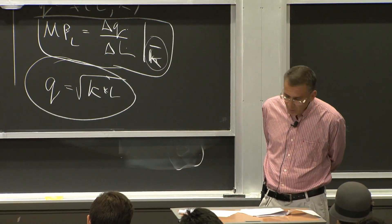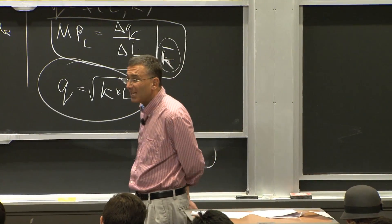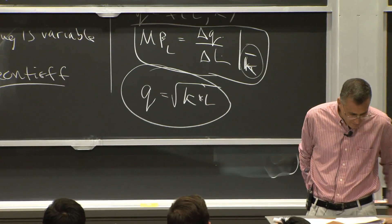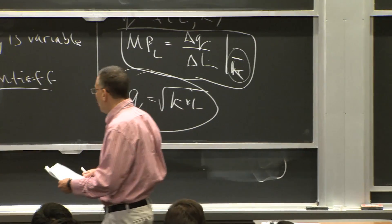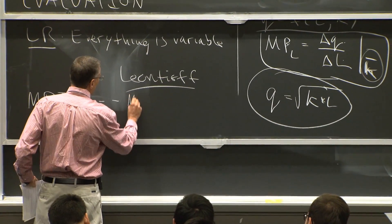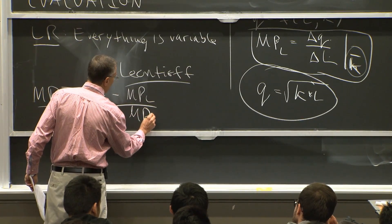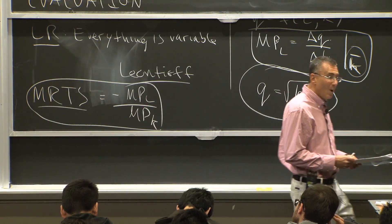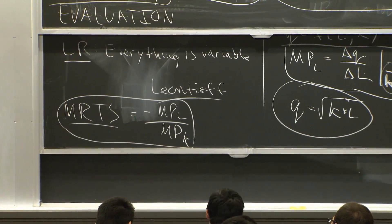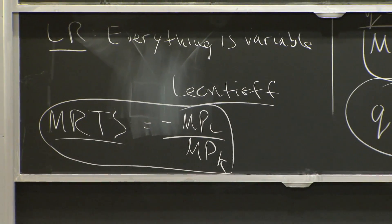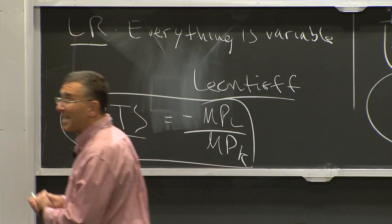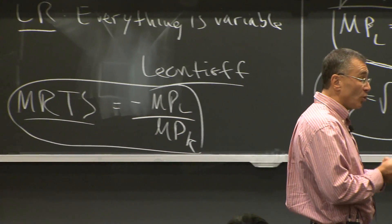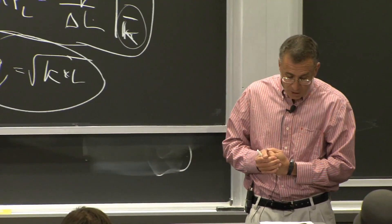Just as the marginal rate of substitution is the ratio of the marginal utilities, the marginal rate of technical substitution is the ratio of marginal products: MRTS equals minus the marginal product of labor over the marginal product of capital. This mirrors how the MRS is the ratio of the marginal utility of the good on the x-axis to the marginal utility of the good on the y-axis.